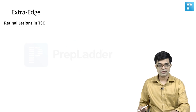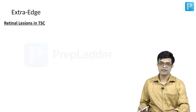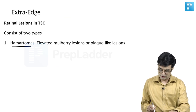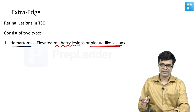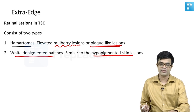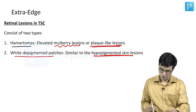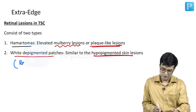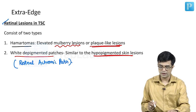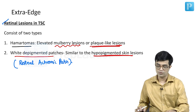There are also retinal lesions described in tuberous sclerosis. The first type is retinal hamartomas, which can produce a mulberry lesion or plaque-like lesion. The second type is simply white depigmented patches similar to hypopigmented skin lesions, also called retinal achromic patches. Two types of retinal lesions are described in tuberous sclerosis.